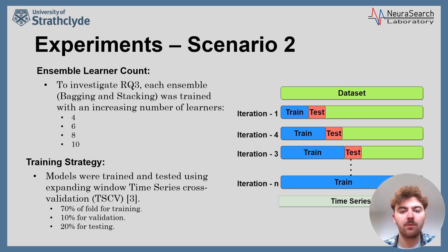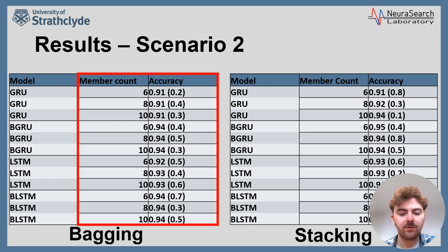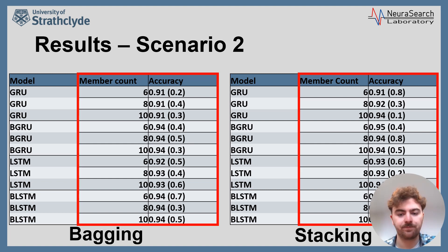To further investigate research question three, we increased the number of individual learners in each ensemble from 4 to 6, 8, and 10 learners. This was done to assess how many learners can be added before performance stagnates, allowing us to determine the optimal number of learners to compose an ensemble network. The results shown in the table — with the bagging ensembles on the left and stacking ensembles on the right — indicate that for the GRU, BGRU, LSTM, and BLSTM, as the member count increases from 6 to 8 to 10, there is no significant increase in performance. The same can be said for the stacking ensembles, where there is some slight variation in accuracy, but not significant enough to derive any meaningful conclusion.